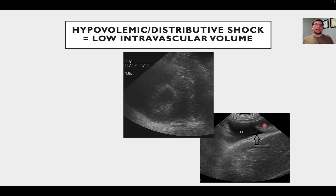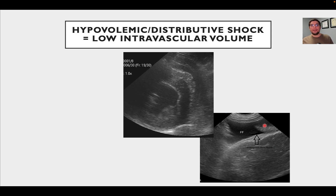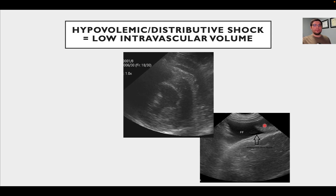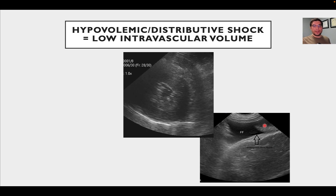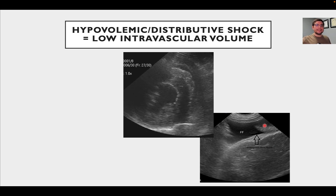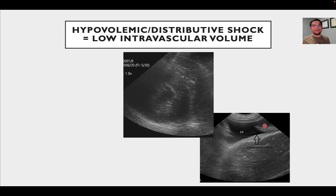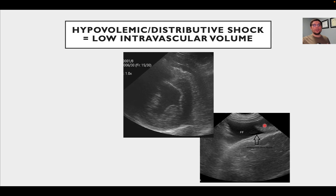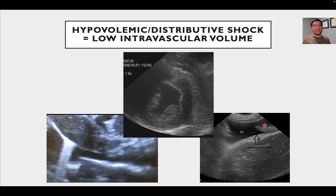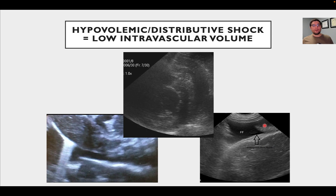You may also see free fluid — if the patient is bleeding, that's a source of hypovolemia; if there's a septic abdomen, free fluid may be present too. However, patients with right-sided heart failure may also have free fluid, so free fluid alone does not guarantee hypovolemia. You need to integrate the appearance of the left ventricle, physical exam, and historical information. Finally, significant caudal vena cava variation on inspiration versus expiration can further support a diagnosis of hypovolemia.